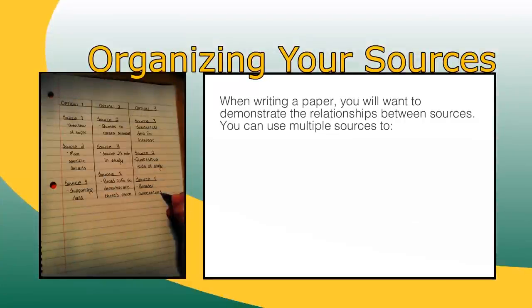When you are ready to begin outlining, ask yourself where in the scholarly conversation each source fits and organize your paper accordingly. You will almost always need to play around with the order to determine the best way to present the scholarly knowledge on your topic.